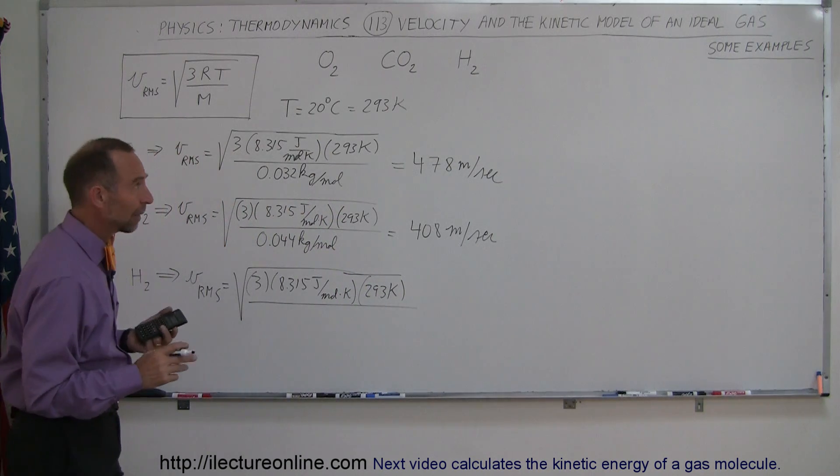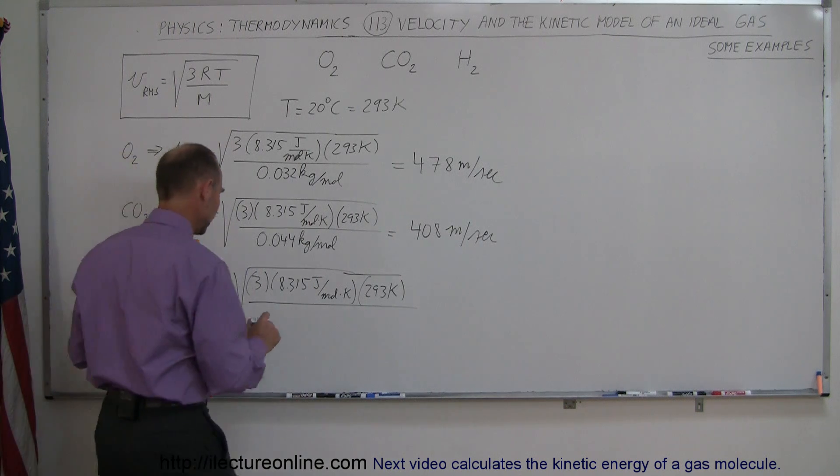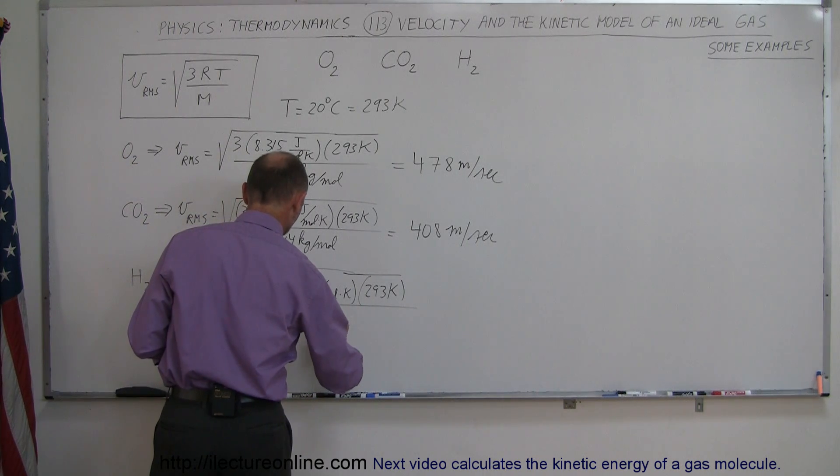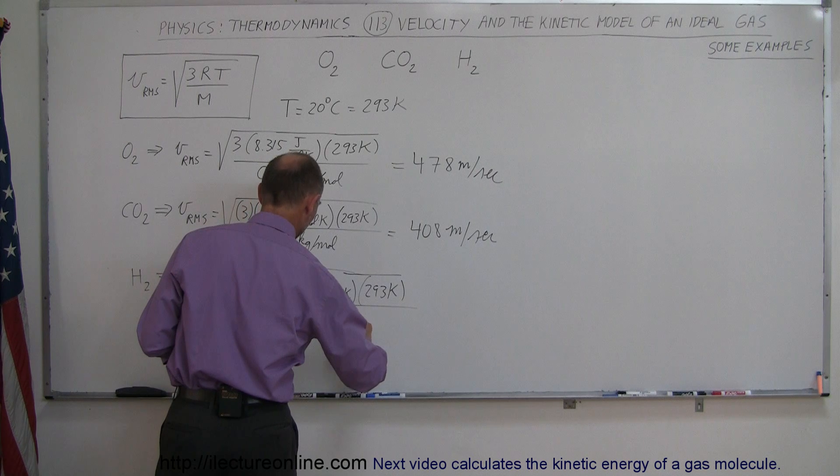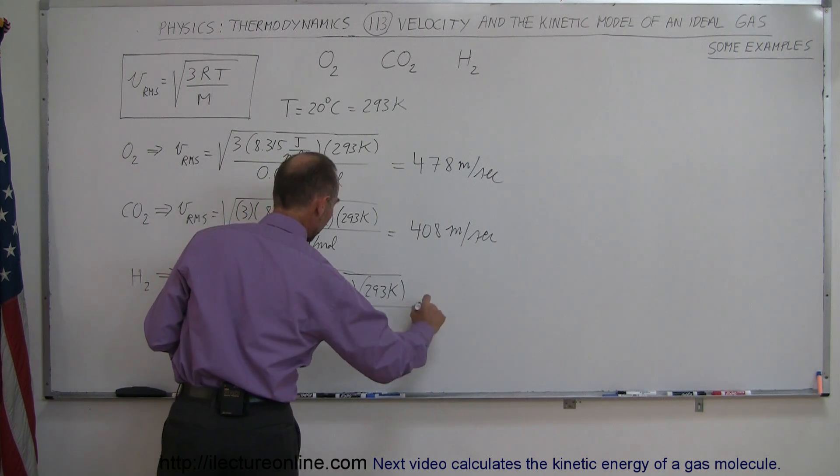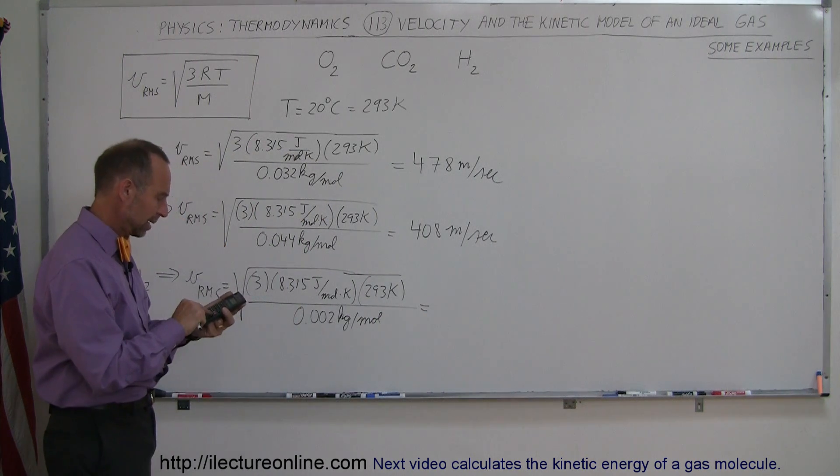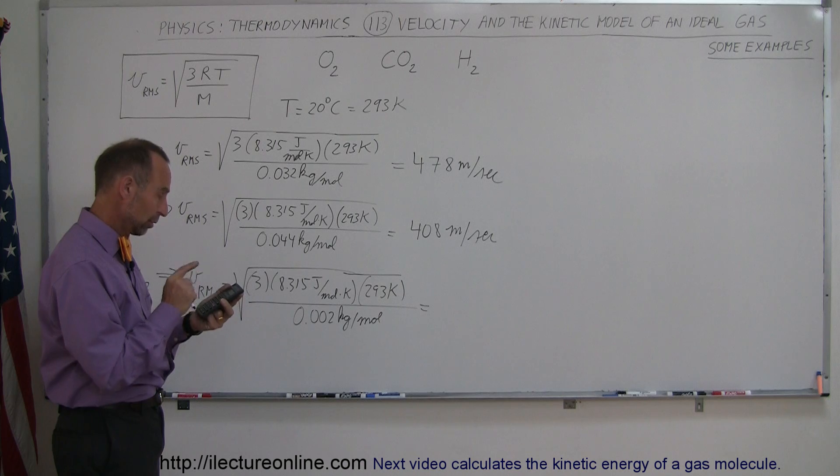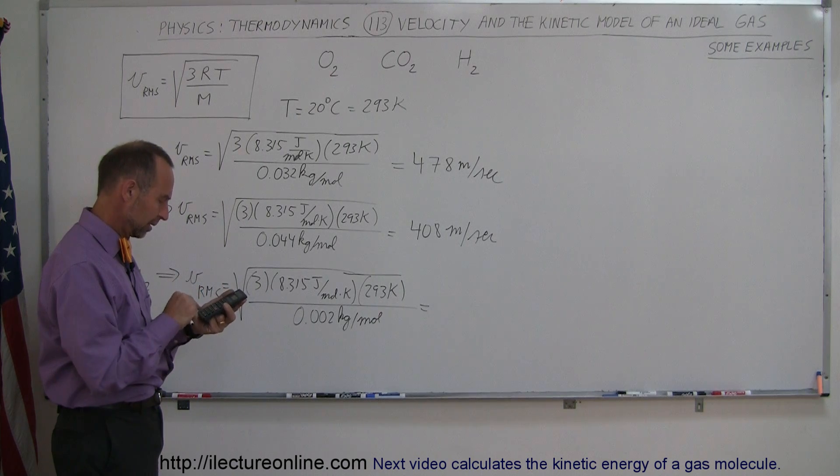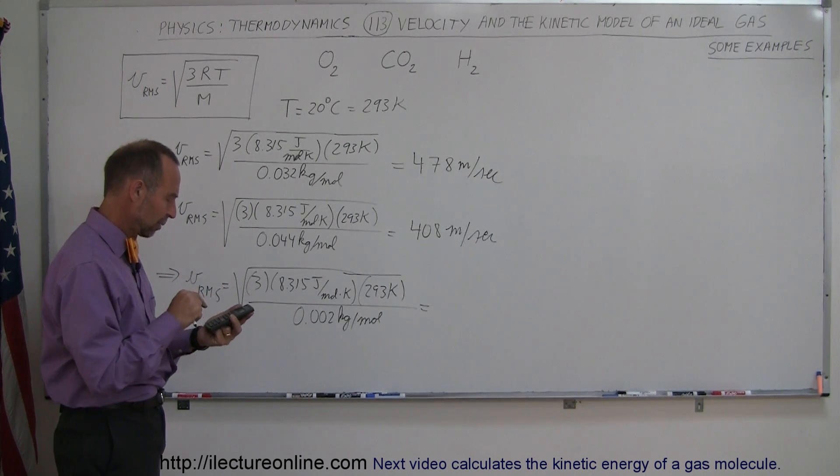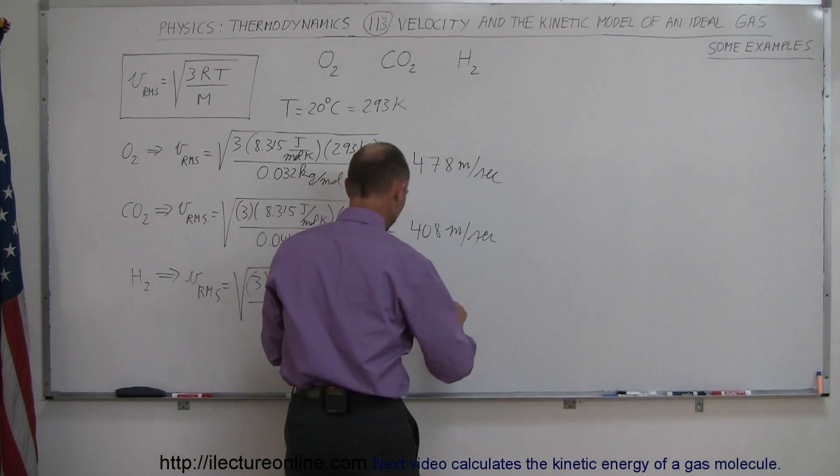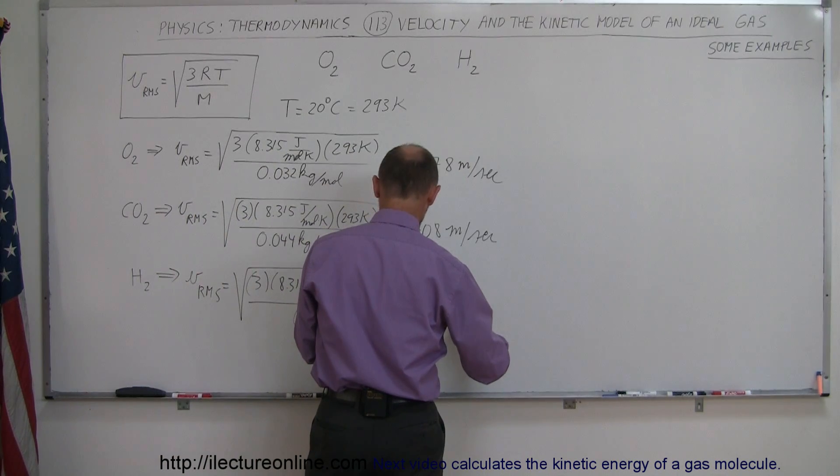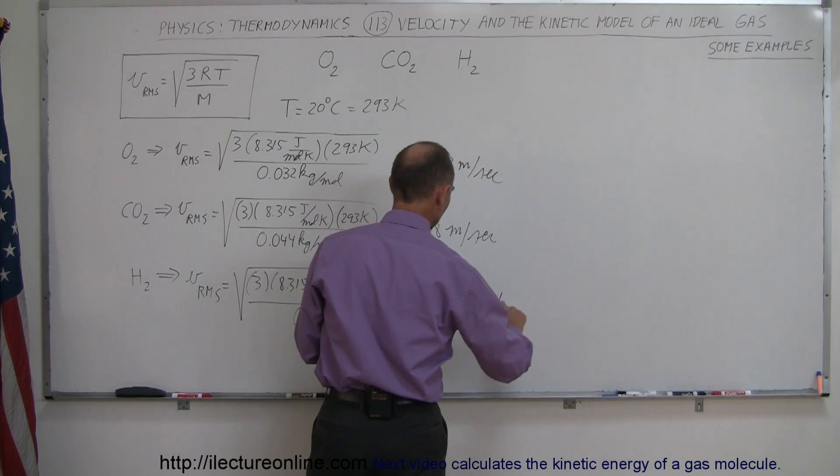The mass would be different. In that case, a diatomic molecule of hydrogen has 2 grams per mole of mass, so 0.002 kilograms per mole. That ends up being 3 times 8.315 times 293 divided by 2, divided by 1,000, take the square root. Notice that one moves at a speed of 1,912 meters per second.